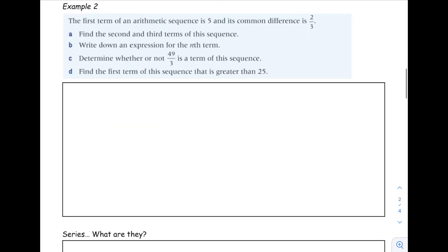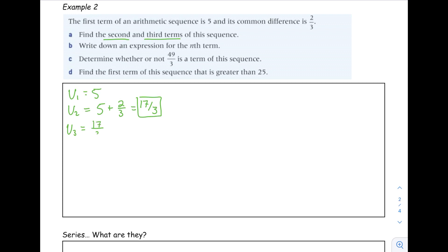Example 2: the first term of an arithmetic sequence is 5 and the common difference is 2/3. Find the second and third terms. The second term is 5 plus 2/3, which equals 17/3. The third term is the second term plus 2/3, giving 19/3. You can keep answers as fractions — that's not a problem.